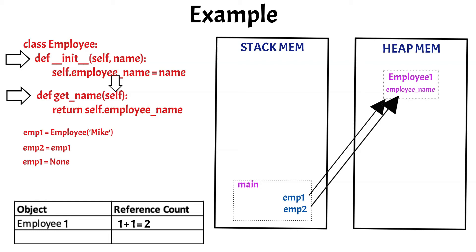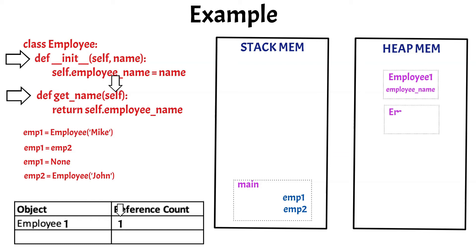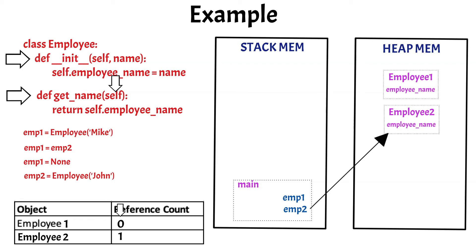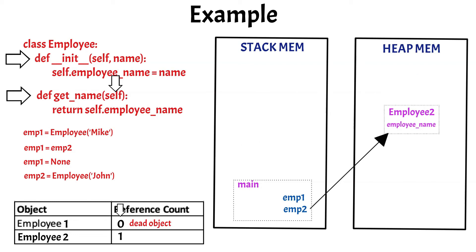Now if we write emp1 = None, then the mapping between the emp1 variable will be broken from employee object 1 in the heap memory. This will reduce the reference count of employee object 1 from 2 to 1. Now if we write emp2 = Employee('John'), then a new object will be created in the heap memory, and the variable emp2 will be mapped to the new object. This will reduce the reference count of employee object 1 to 0. The moment the reference count goes to 0 for employee object 1, it will be declared as a dead object. This will immediately invoke the garbage collector, and this object will be cleared from the memory. This is how the garbage collector is invoked based on the reference counting of each object present in the memory.